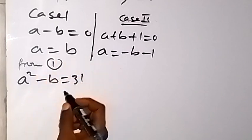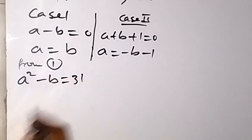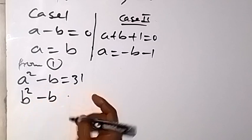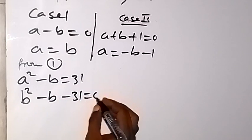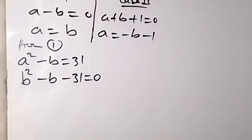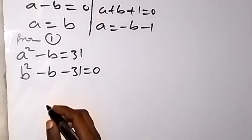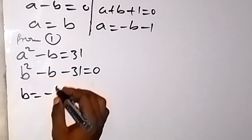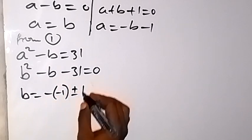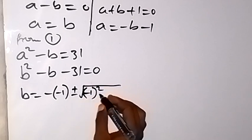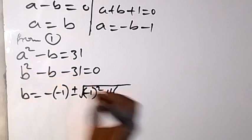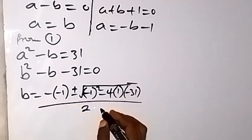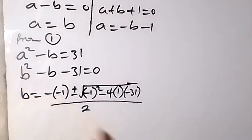From equation 1, a² minus b equals 31. Since in case 1 a equals b, we substitute to get b² minus b minus 31 equals 0. Using the quadratic formula, b equals minus(−1) plus or minus the square root of (−1)² minus 4(1)(−31), all over 2(1).